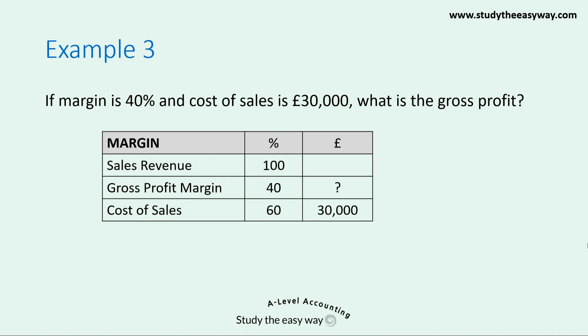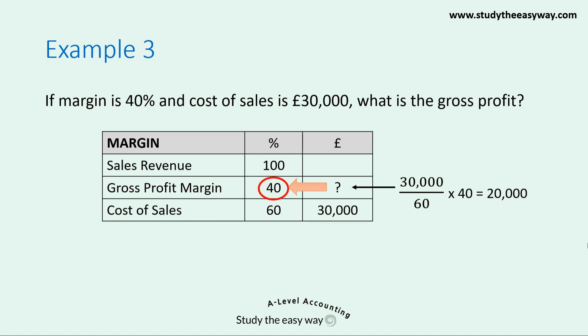Our question mark is against the gross profit, because that's the figure we're trying to calculate. Using the same method: take £30,000 and divide it by the figure next to it in the percentage column, which is 60. Then multiply by the figure in the percentage column next to the question mark, which is 40. Putting these figures into your calculator gives a gross profit of £20,000.